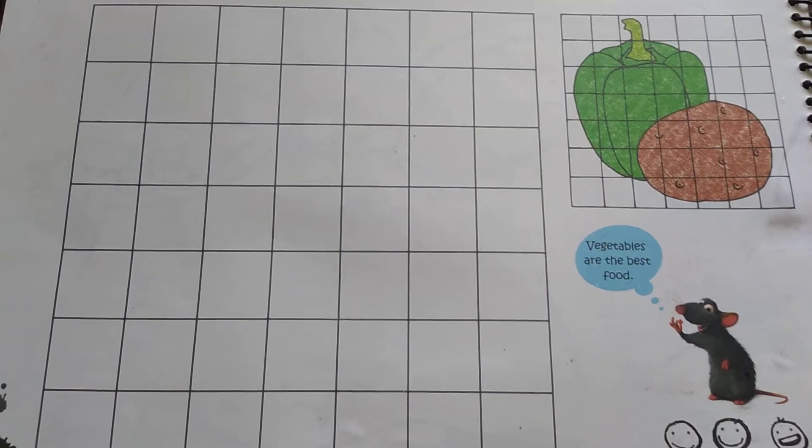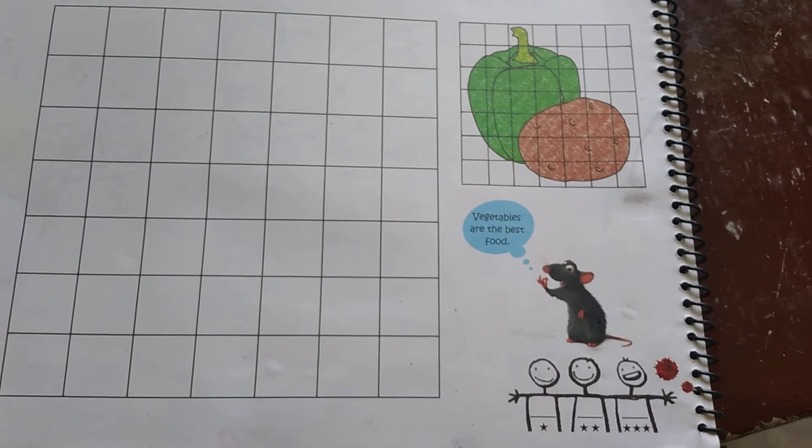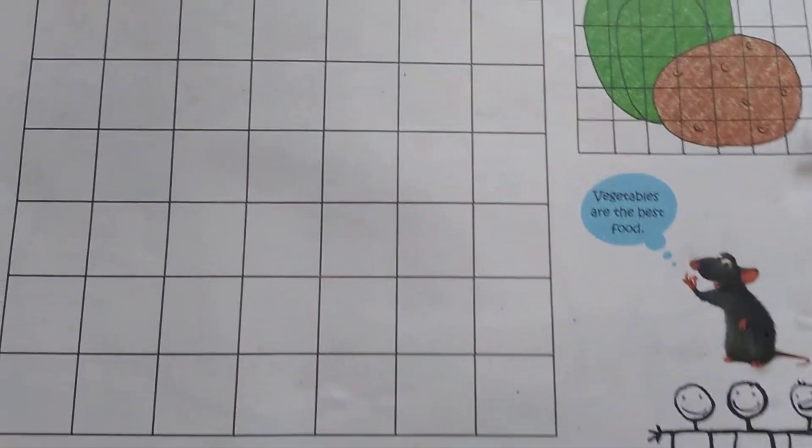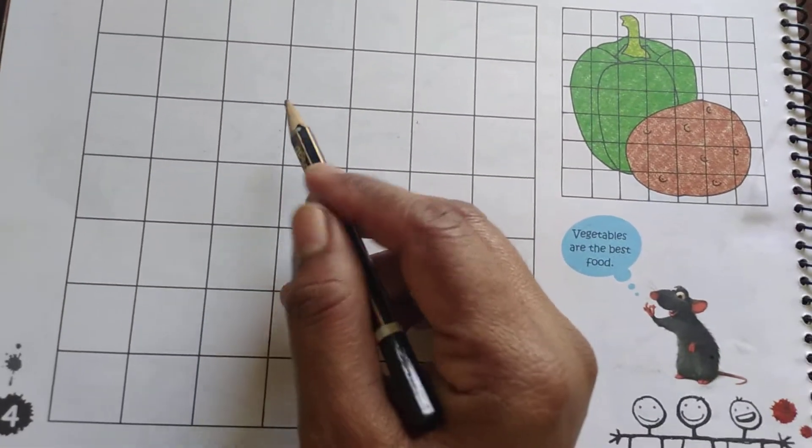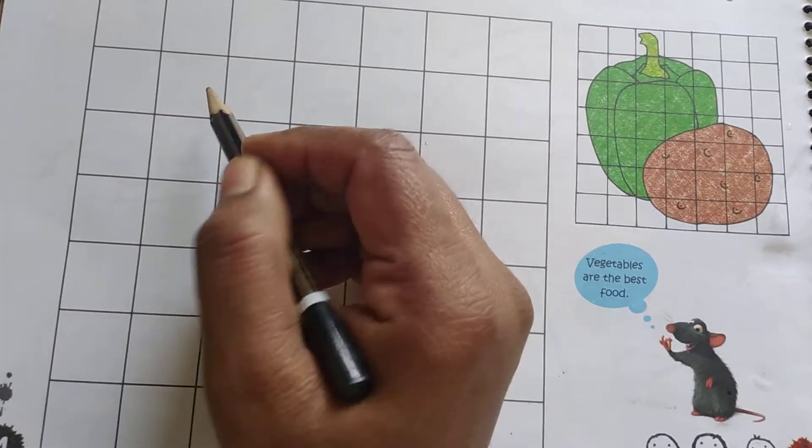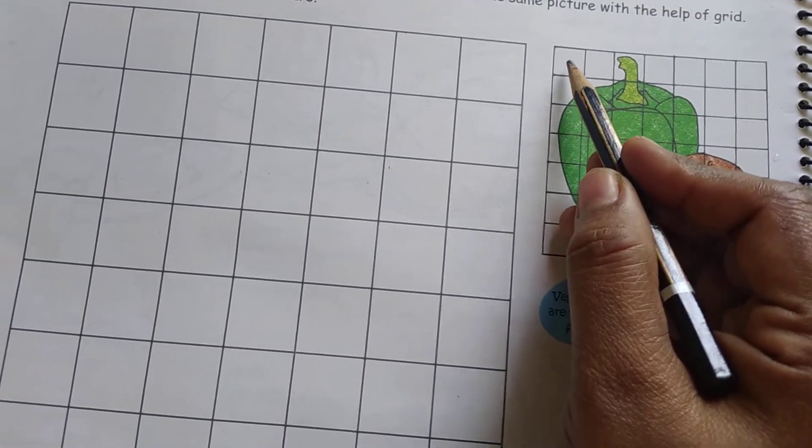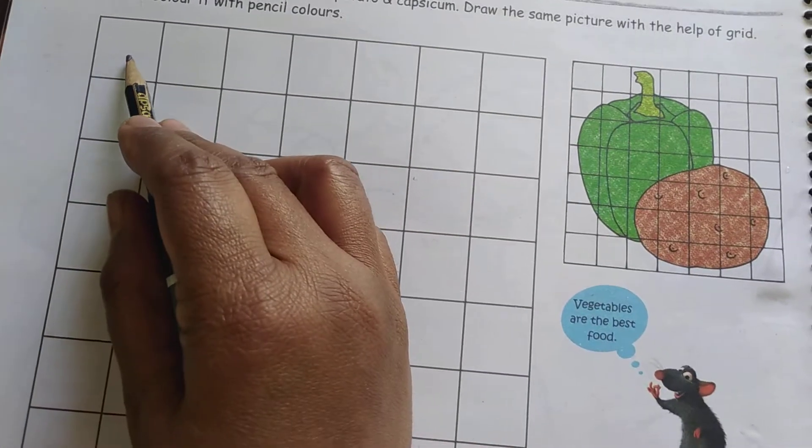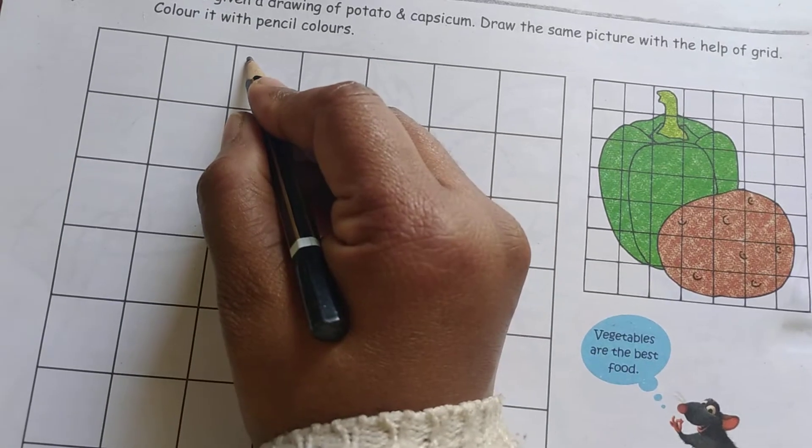Hello students, welcome to our drawing class. Today I will show this grid drawing, how to do, so let's start. You have to count the boxes and then you have to draw. So from here first, second, and third box. First, second, and third box. From here you have to start.